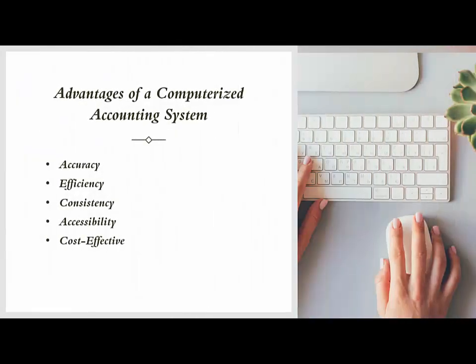Advantages of a computerized accounting system: Accuracy — reduces human errors in calculations and data entry, ensuring more accurate financial records. Efficiency — speeds up the accounting process by automating repetitive tasks, allowing accountants to focus on analysis and decision-making. Consistency — ensures consistent application of accounting principles and standards across all transactions. Accessibility — provides easy access to financial data and reports from anywhere, especially with cloud-based systems. Cost-effective — reduces the need for extensive manual labor, lowering overall operational costs.